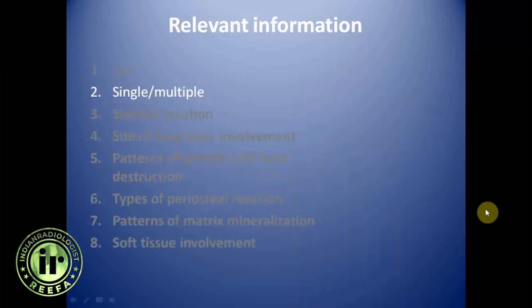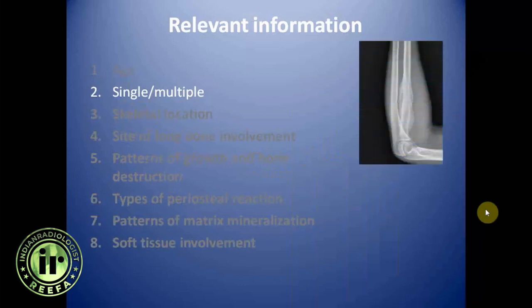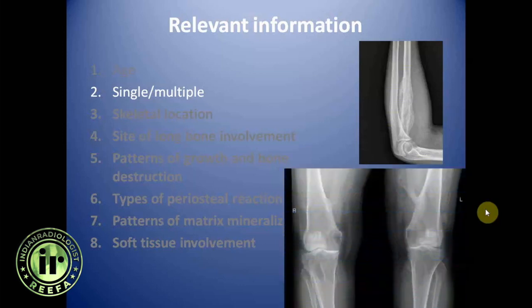We need to know whether the lesion is single or multiple. Mostly tumors are single; however, we can see multiple lesions like in cases of multiple osteochondromas. Multiple lesions can be seen in fibrous dysplasia, osteochondroma, enchondroma, or in malignant entities like multiple myeloma or metastasis. So multiplicity can be seen in both benign and malignant entities.